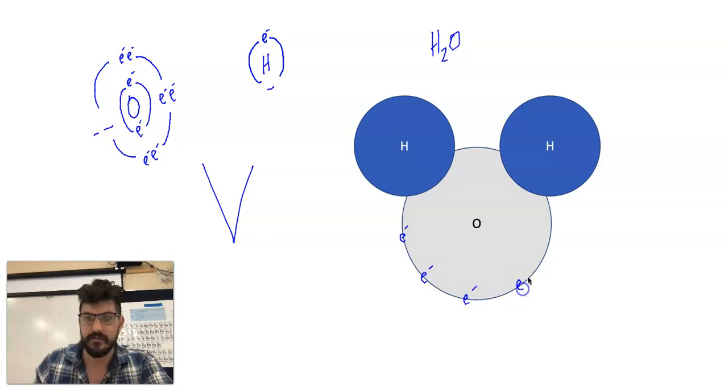So oxygen is going to have these six electrons sitting in its outer shell. So there's three, four, five, and I'll put six over here. And it really wants to fill this outer shell. It wants to have a full outer shell. So it's going to look for someone or another element that's willing to give up two electrons.